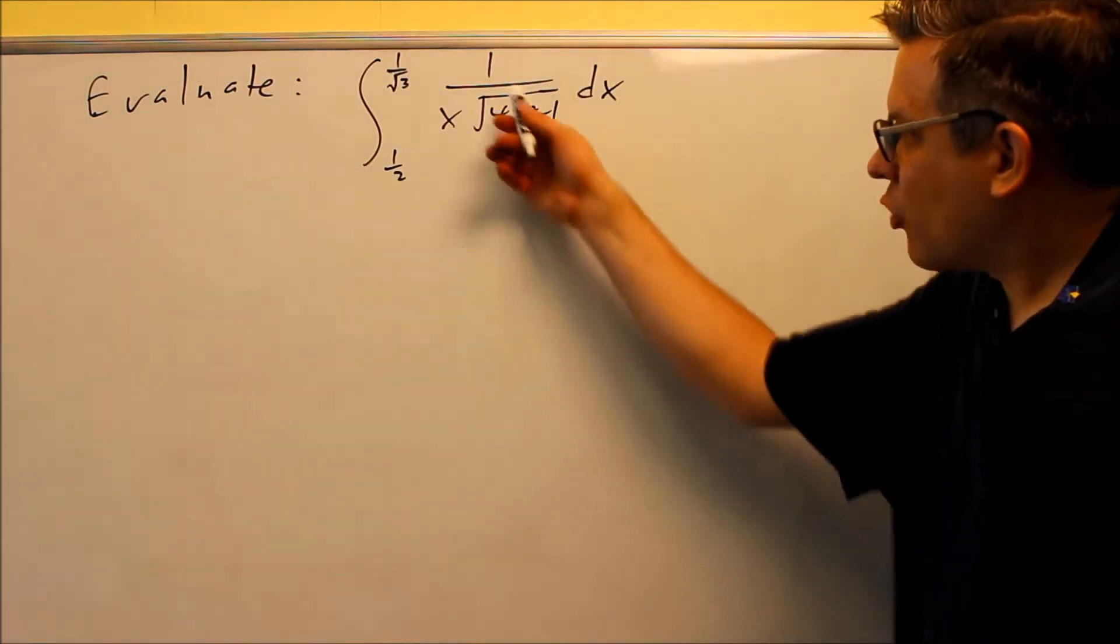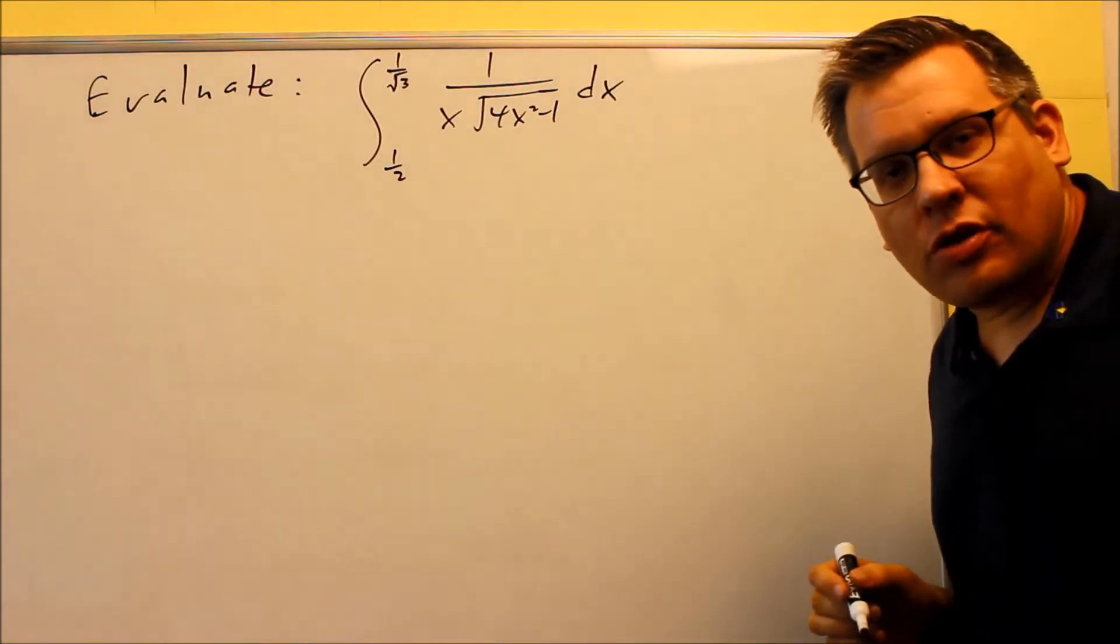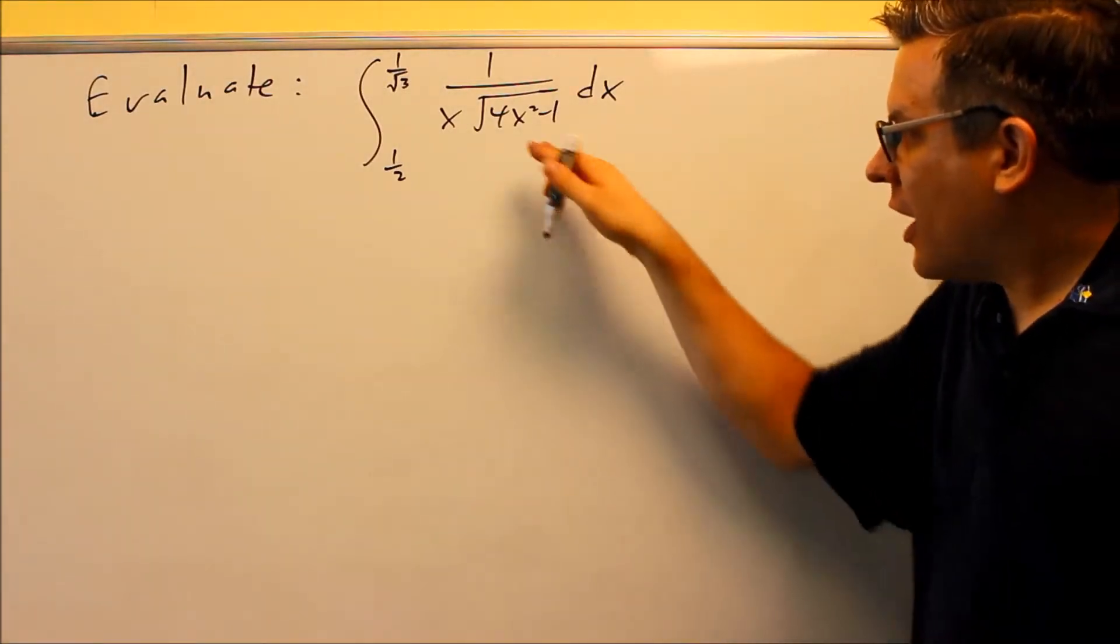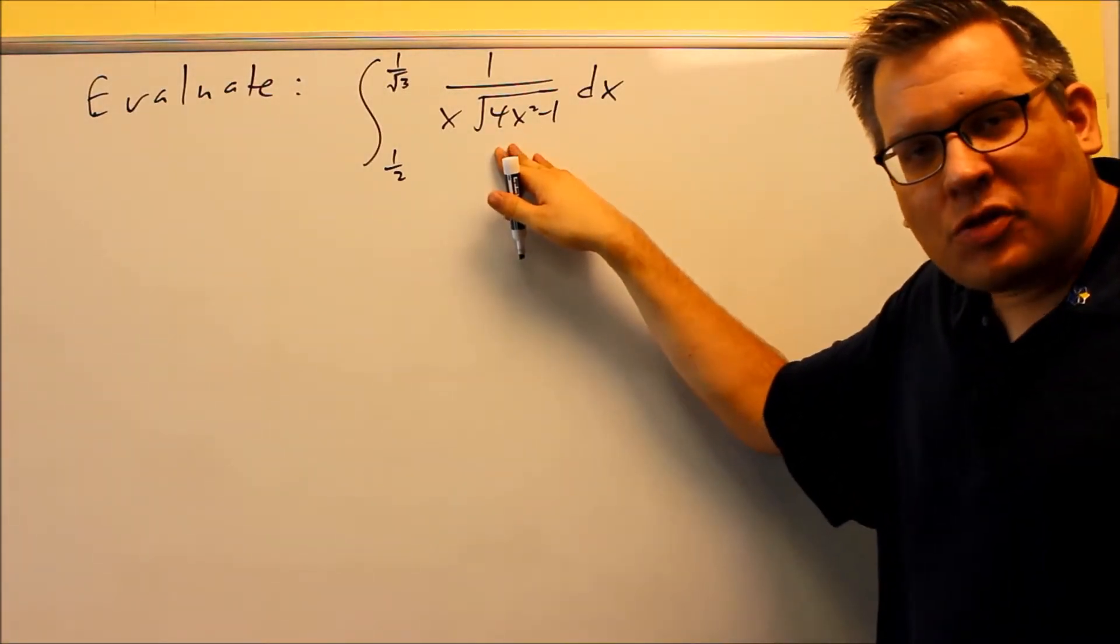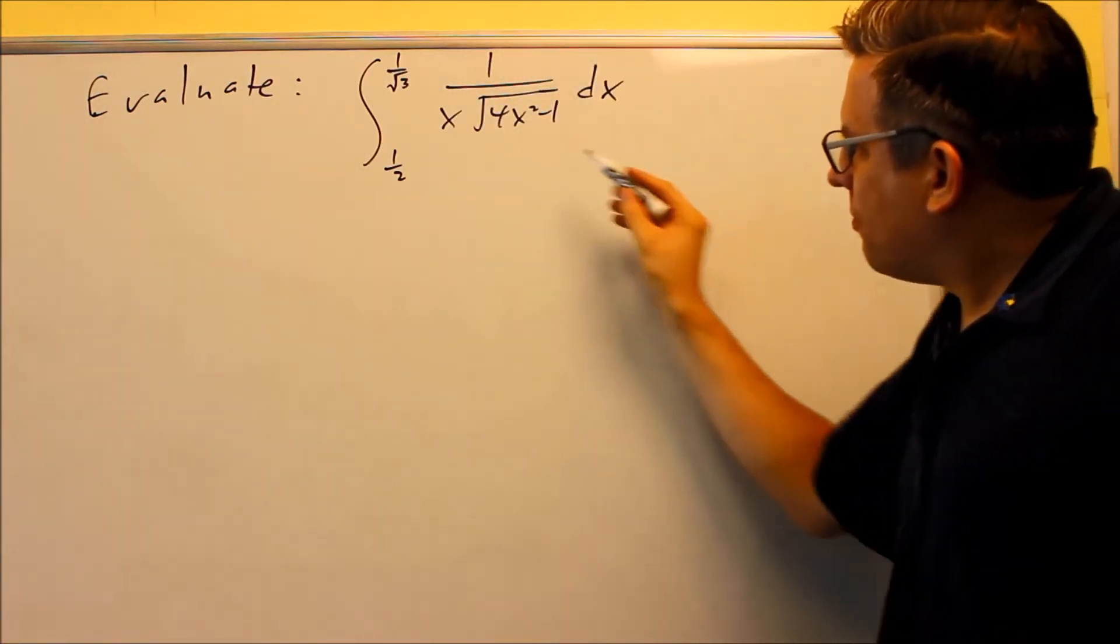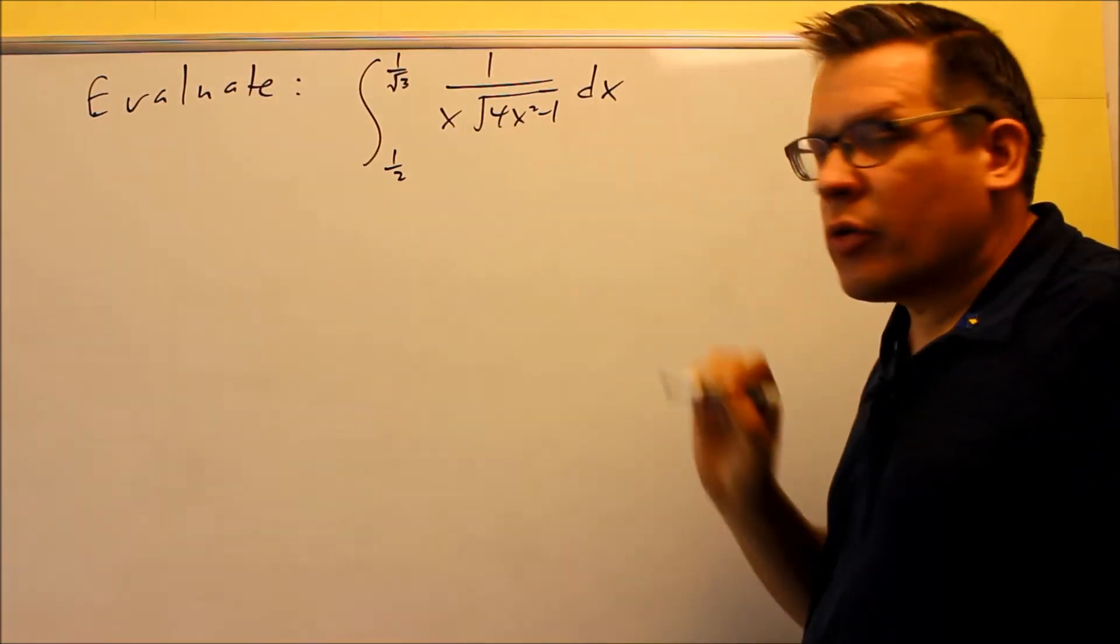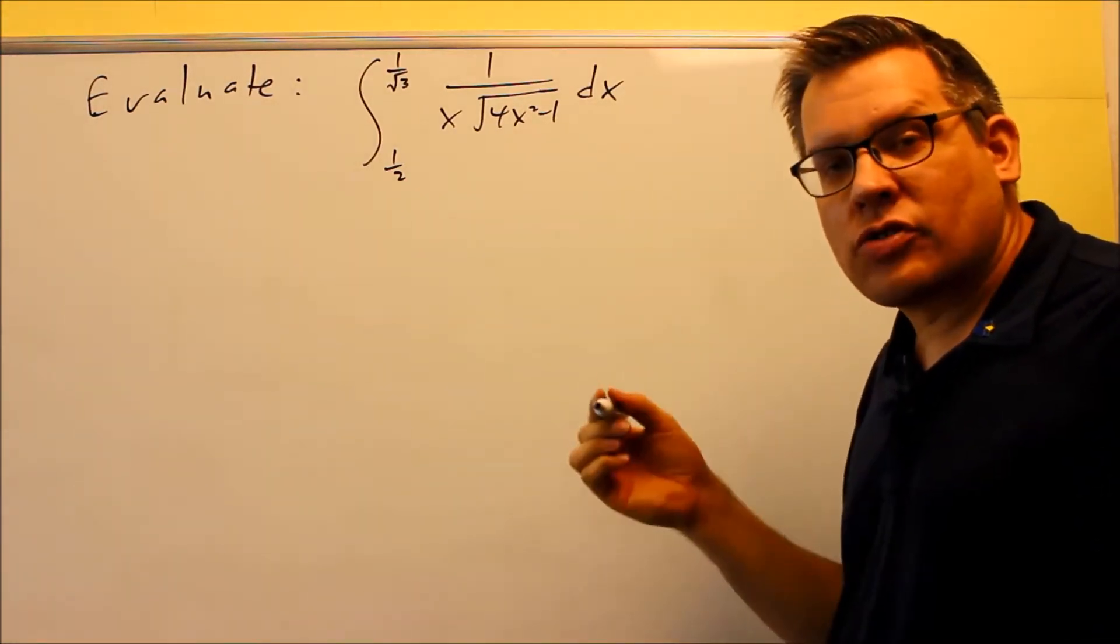If you see problems like this that have square roots in the bottom with an x out front, a lot of times these are ones that turn into the inverse trig functions. So you want to go back and review those formulas we talked about before in the antiderivative section. Okay, so for this type of one, we need to recognize the correct formula. If you have an x and a square root, that means it's going to turn into an inverse secant.